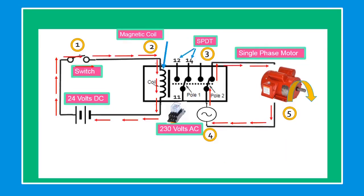The current flows from 24V supply battery through number 1 switch through number 2 magnetic coil, energizing the magnetic relay. Once the magnetic relay is energized, the number 3 single pole double throw, or SPDT contact, changes its state from 11 to 12 through 11 to 14. And the current from number 4 power voltage 230 volts flows through closed contact number 5 motor, and the motor will run, and the current flows back to power supply.